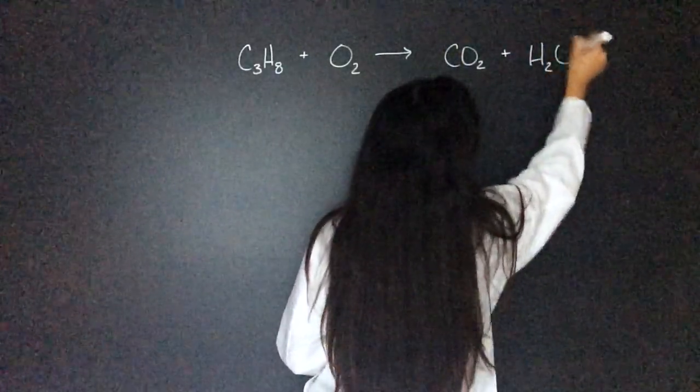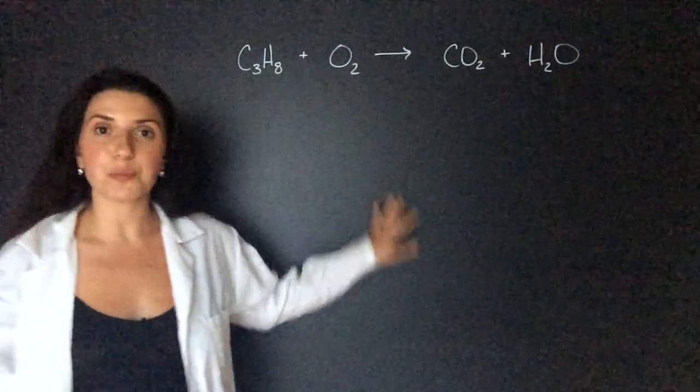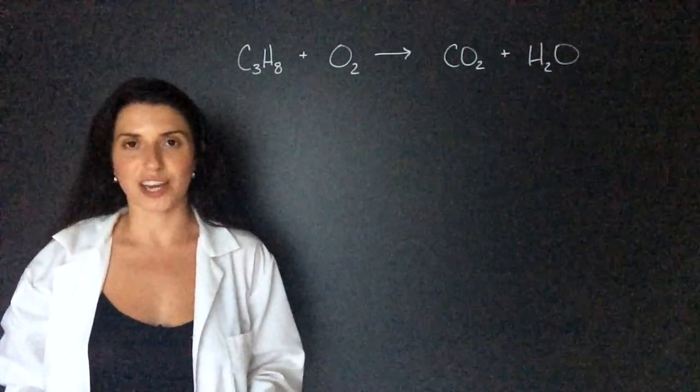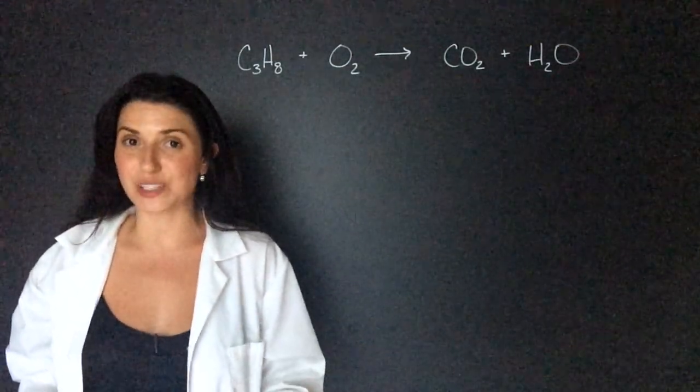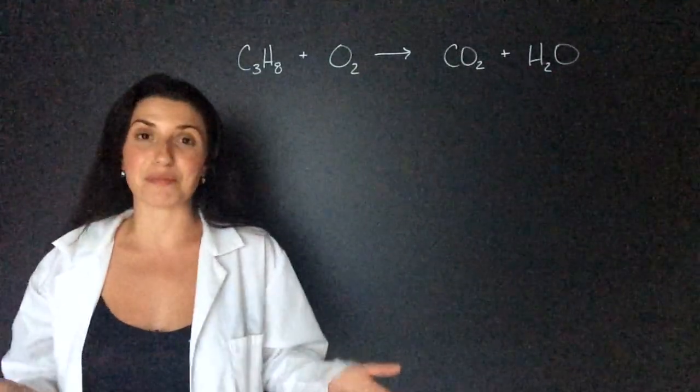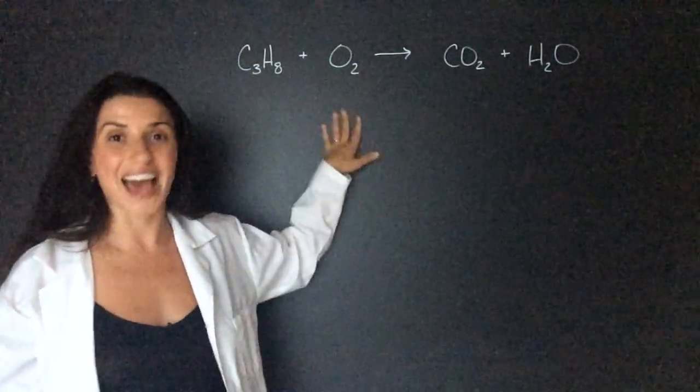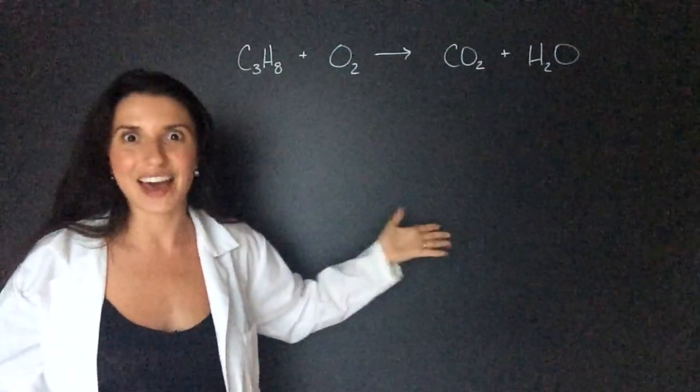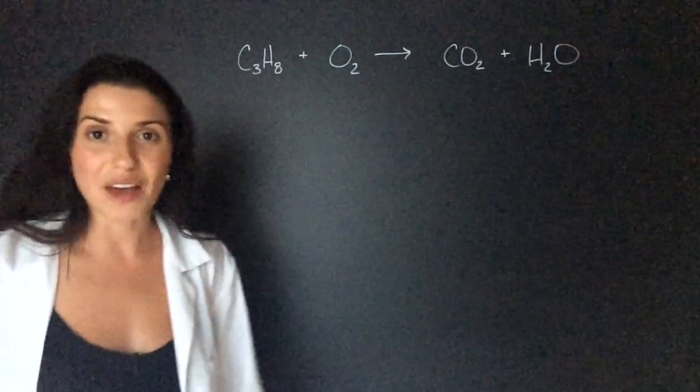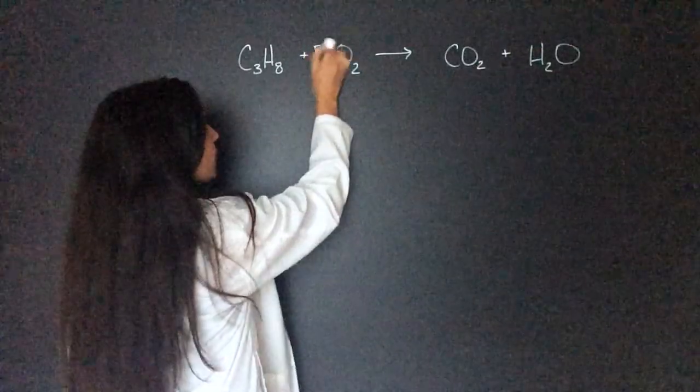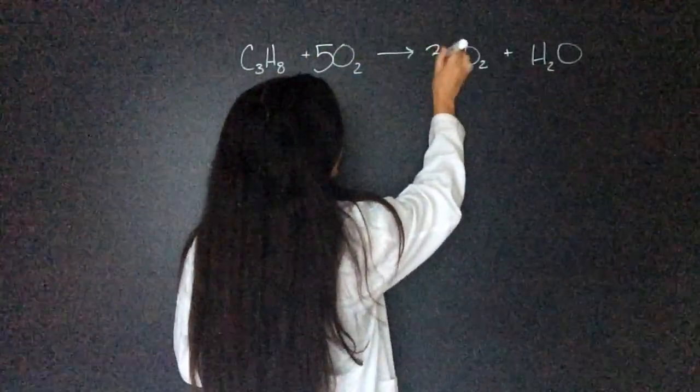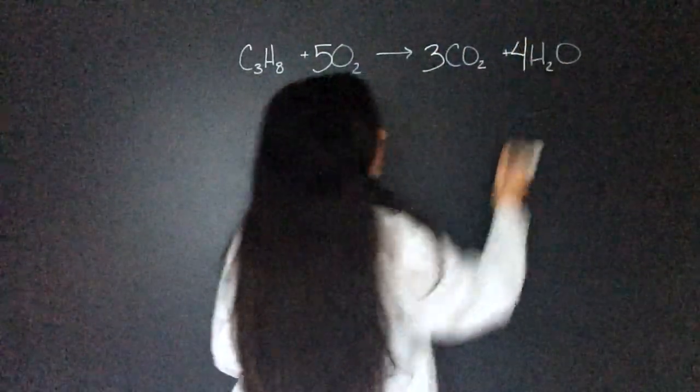Now first up we have to balance this equation, and if you want to review how to balance equations, watch my video from yesterday on how to balance an equation. I actually do this exact reaction in that video. So what we found in that video was there were 5 O2, 3 CO2, and 4 H2O. So there's our balanced formula.